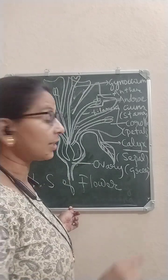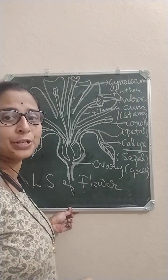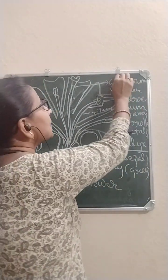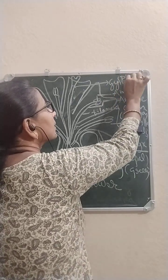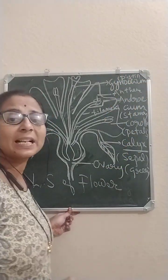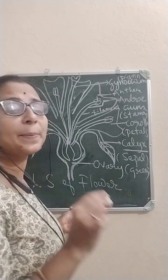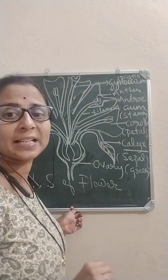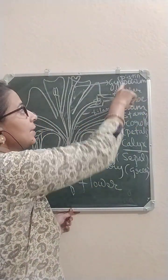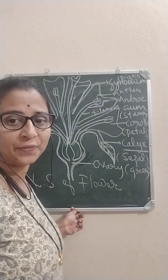The fourth member of a flower is called gynoecium. Each member of the gynoecium is called a pistil or carpel. Pistil is the female reproductive organ in the case of a flower. The anther, stamen, and pistil together are called the essential parts of a flower.